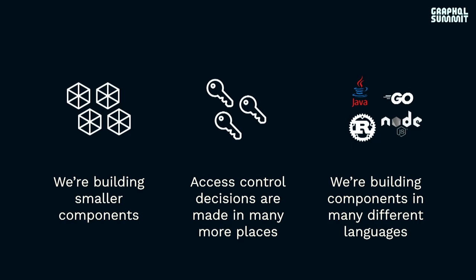The way that we build software has changed quite a bit in recent years. Our industry has largely moved to the cloud. We've decomposed monoliths and turned them into microservices. Your subgraphs are very likely microservices. At Indeed, we actually have around 200 subgraphs and counting. So we have more services, more components, more interactions that require some sort of authorization check. These access control decisions happen in many, many more places than has historically been the case.